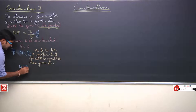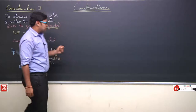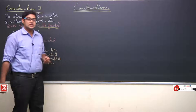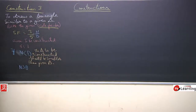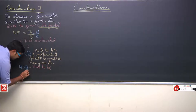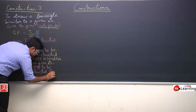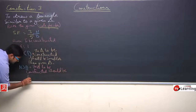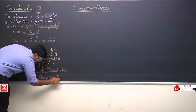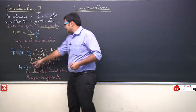If the numerator is greater than the denominator, then the triangle to be constructed should be larger than the given triangle. The triangle that we have to construct should be larger than the given triangle if the numerator is greater than the denominator.